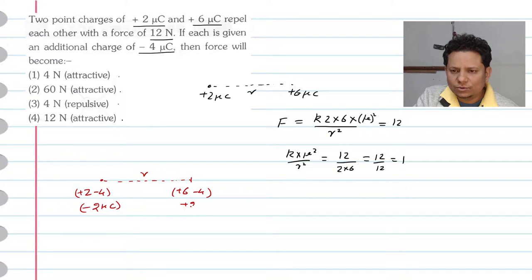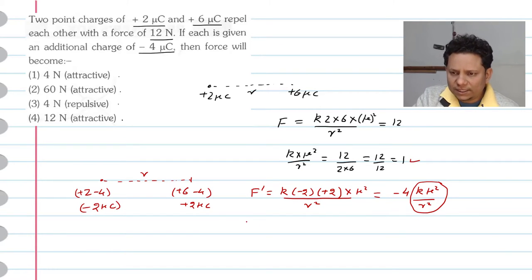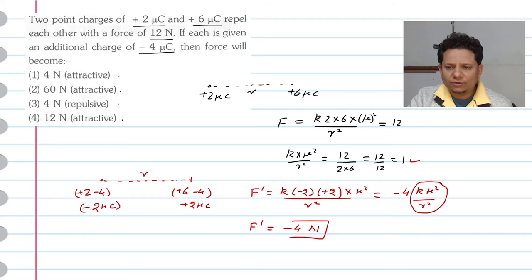and the second becomes plus 2 micro coulomb. So now F prime, the new force, will be equal to k multiplied by minus 2 multiplied by plus 2 multiplied by micro square divided by r square. This will be equal to minus 4k mu square divided by r square, which means F prime will be equal to minus 4 newton. So force will be attractive, hence option number 1, minus 4 attractive, would be the right answer.